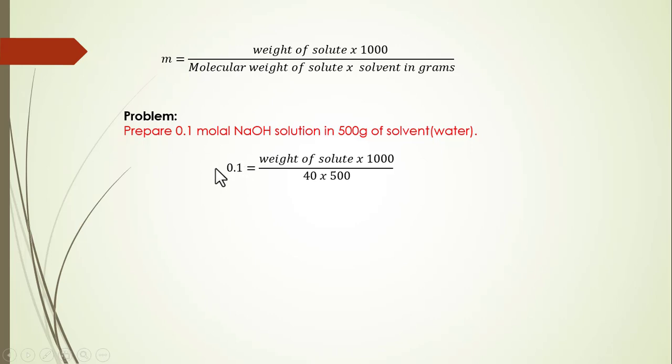Molality of the solution that we are going to prepare is 0.1, weight of the solute is to be determined, 1000, molecular weight of solute—since this is NaOH, the molecular weight of sodium hydroxide is 40 grams per mole—and solvent is already given in grams, so we would insert 500 over here. Let's solve it now.